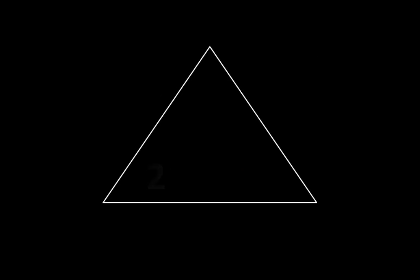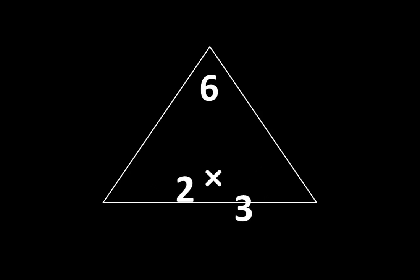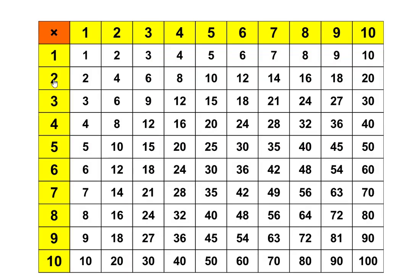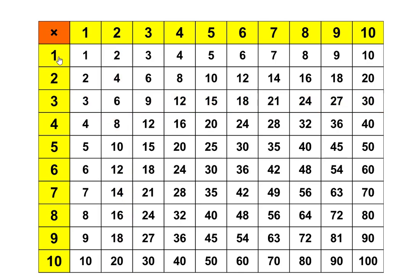Sometimes you may see that represented like this: 2 times 3 is equal to 6. And whenever you do, you know that what is also true is that 3 times 2 is equal to 6. On the multiplication table, we can see 3 times 2 is equal to 6 here, and we can also see it here. So that idea, that relationship appears on the chart in two places.